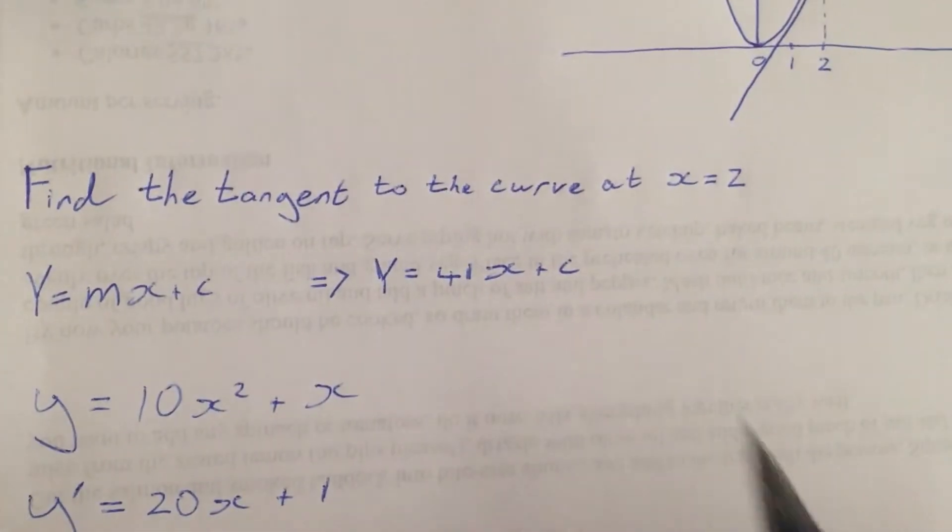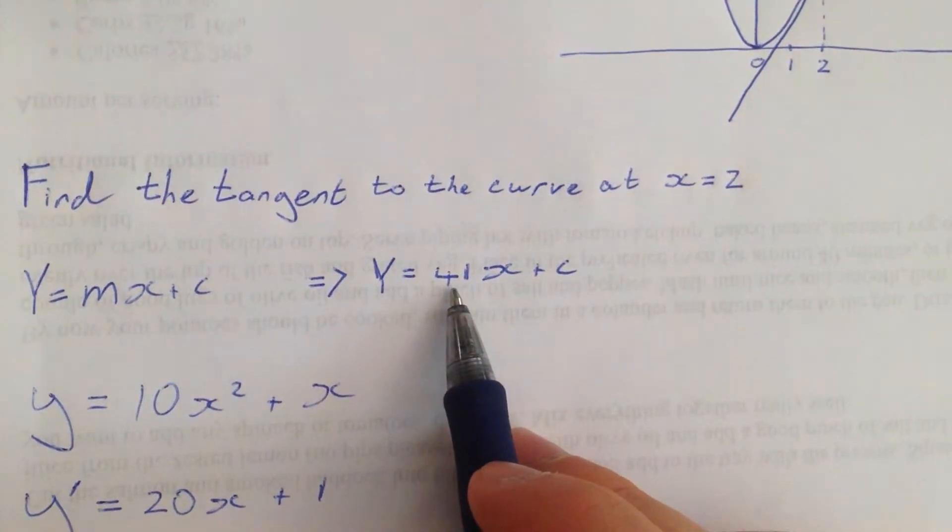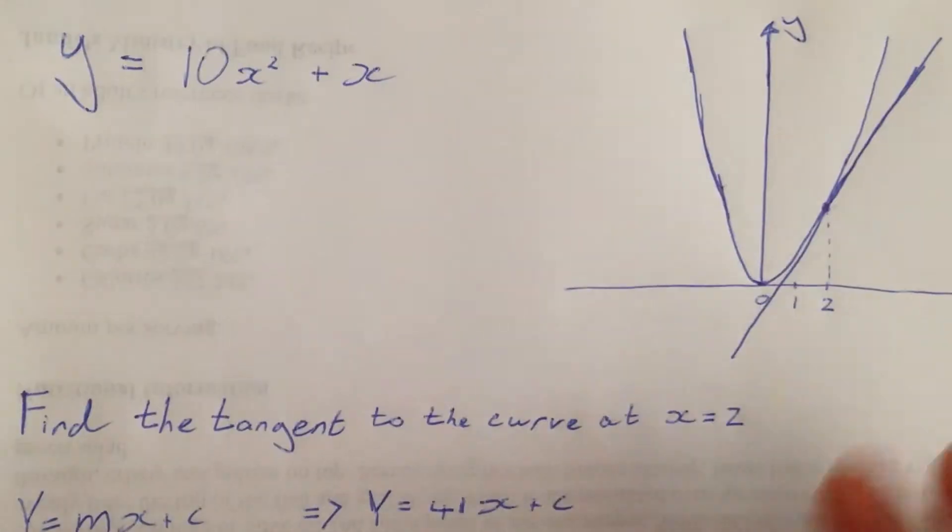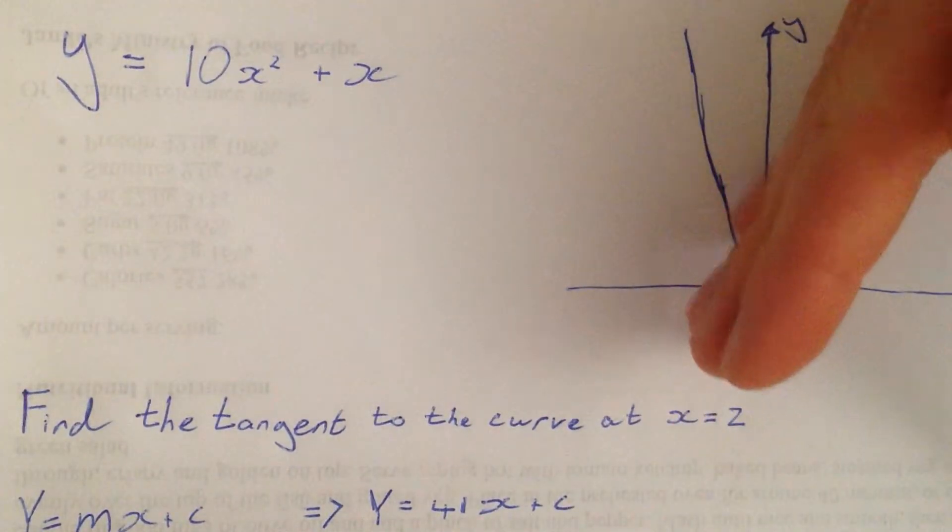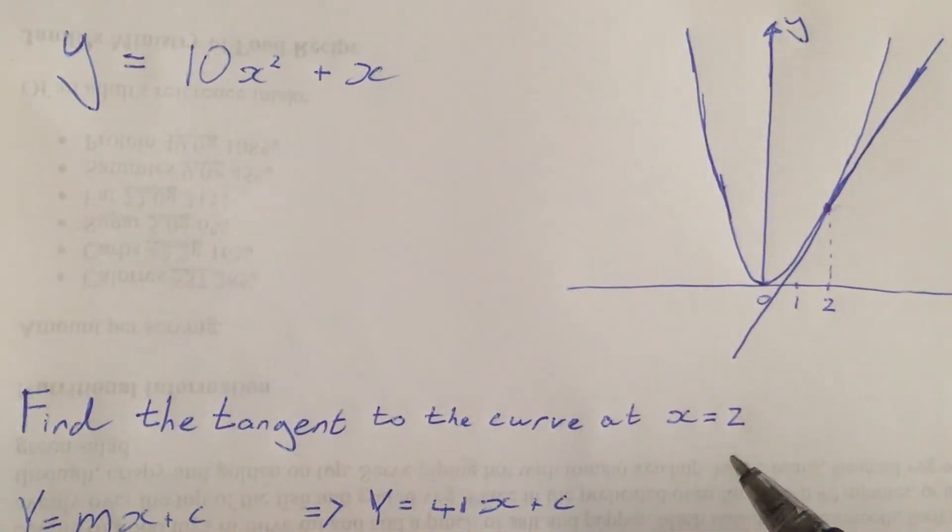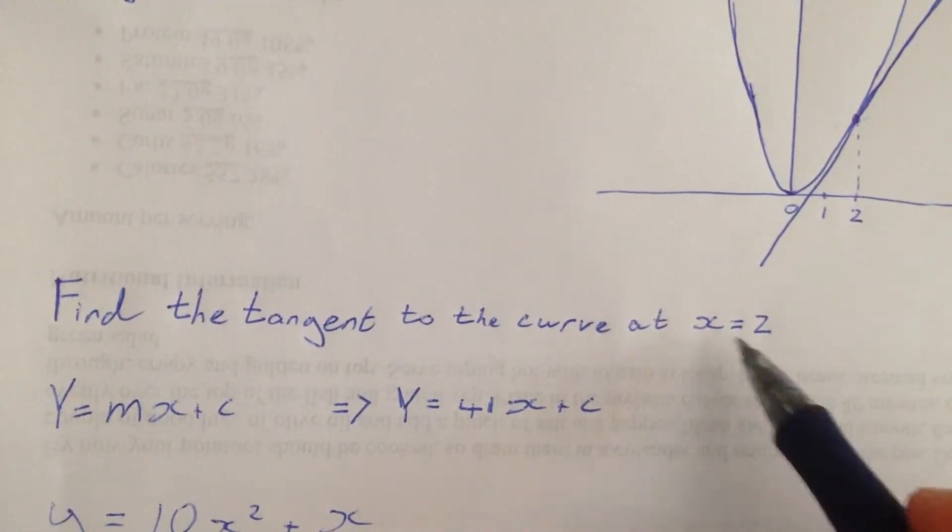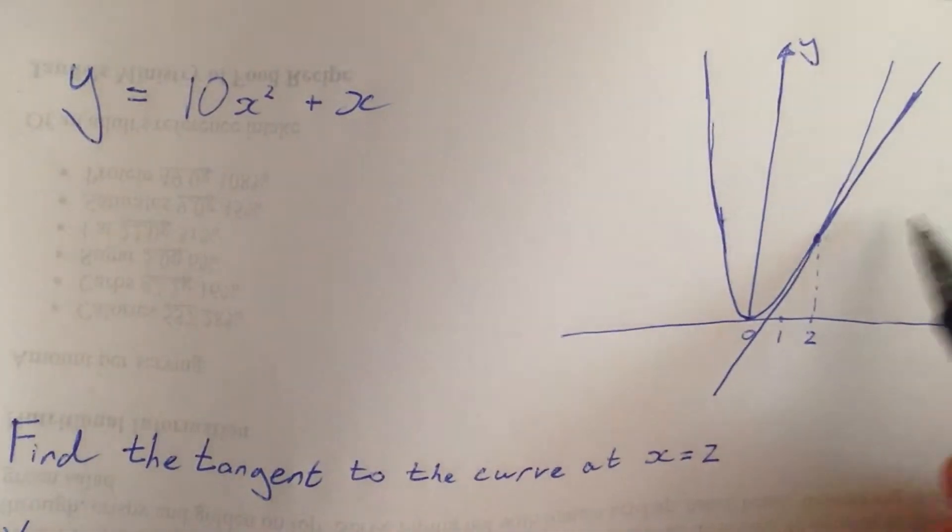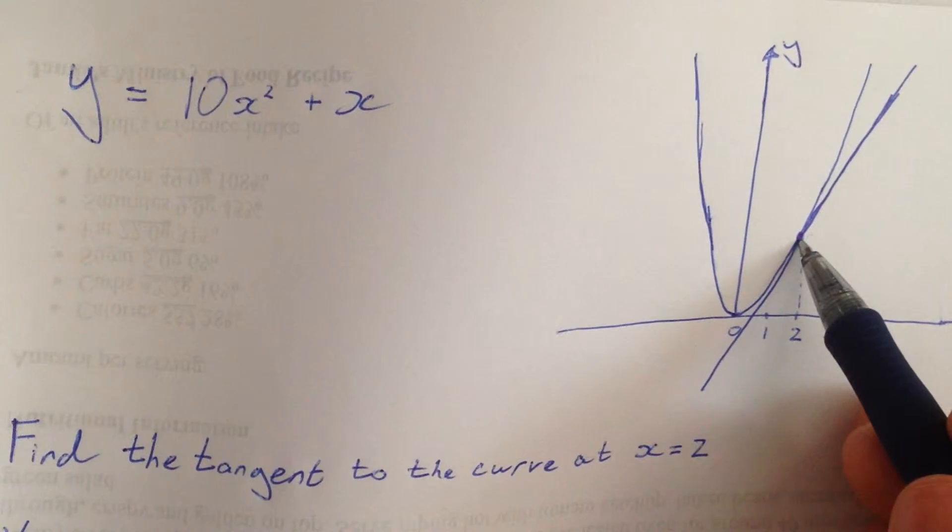So now that we've found out this is what the equation is, we need one more thing to define this line, which is where abouts is this line? Because the line could be anywhere up and down here without defining what our c is. But we can find what that is because we know the value that the function takes on at this point.